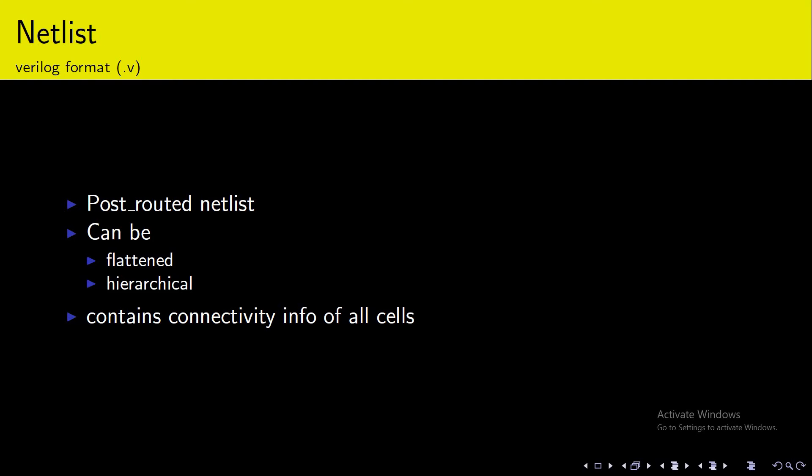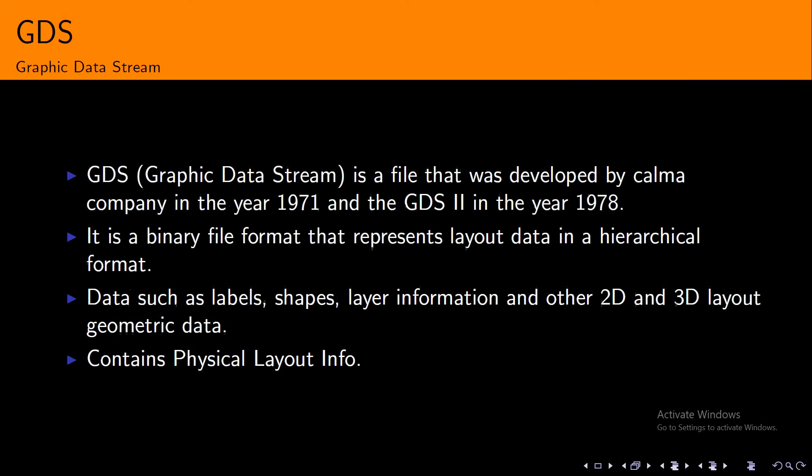The next one is GDS, Graphic Data Stream. Graphic Data Stream is a binary file format that represents layout data in a hierarchical format. GDS was developed by Calma company in the year 1971 and later GDS2 in the year 1978. Data such as labels, shapes, layer information, and other 2D and 3D layout geometric data are contained within it.